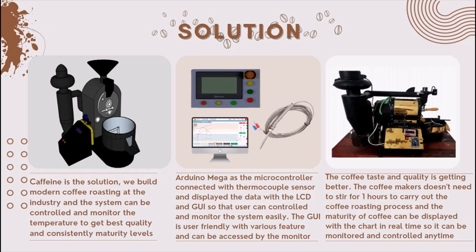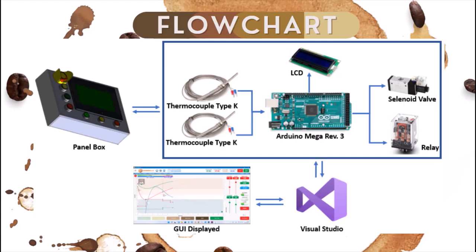The coffee taste and quality is getting better. The coffee maker doesn't need to stir for one hour to carry out the coffee roasting process, and the maturity of coffee can be displayed with a chart in real-time. Here is the flow chart.